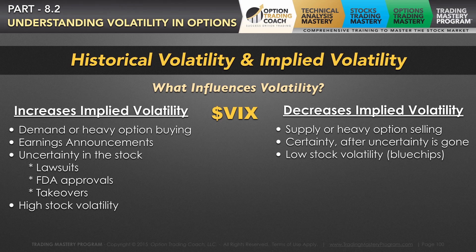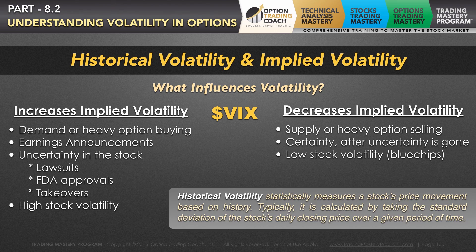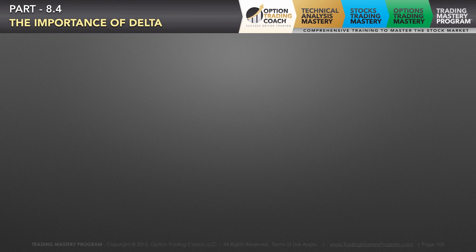You can also use the VIX, which gauges the overall fear in the marketplace, and a lot of options are going to be derived off of the VIX. Historical volatility is the relationship of what the underlying securities or options have traded versus the past, and it's typically calculated by taking the standard deviation of the stock's daily closing price over a given period of time. It's better to buy options when the volatility is low, because when volatility goes up your options are going to go up in value, even if the underlying security doesn't go up in value.